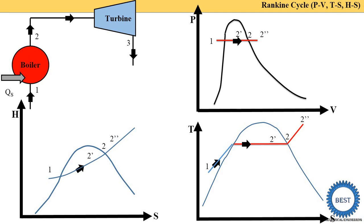The turbine process is called isentropic expansion. Isentropic means entropy remains constant, so entropy at point two equals entropy at point three (S2 = S3). Since entropy is constant, we draw a vertical line on the TS and HS diagrams. From point two, we draw downward because expansion reduces pressure.